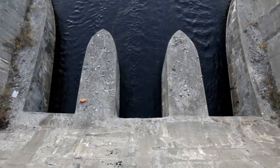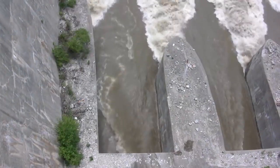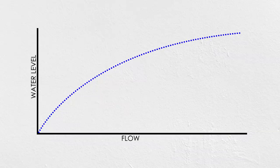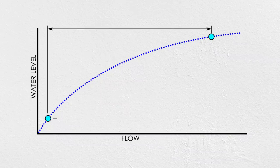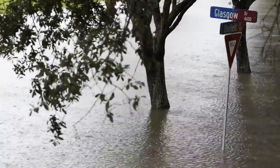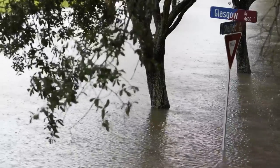In many cases, a weir is a passive structure, meaning that once it's installed, there's no way to change this rating curve, and that's not always ideal. Streams and rivers are subject to tremendous variability in flow rate. A hydraulic structure may normally flow a small amount, but in flooding conditions be asked to pass incredible volumes of water. With a passive structure and fixed rating curve, that variability in flow means tremendous variability in the water level upstream.